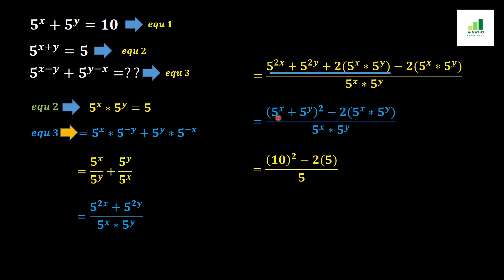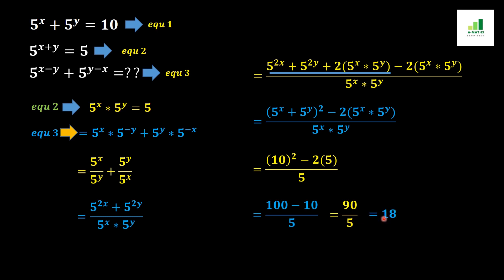We now substitute using our given equations: 5^x + 5^y is replaced by 10 from equation 1, and 5^x · 5^y is replaced by 5 from equation 2. Applying the square gives 100. Then 2 times 5 equals 10, so we get (100 minus 10) over 5, which equals 90 over 5, giving us the final answer of 18.